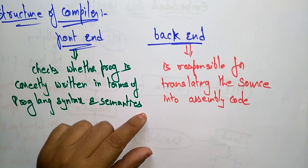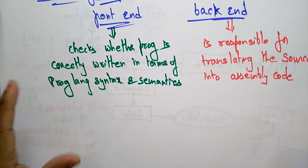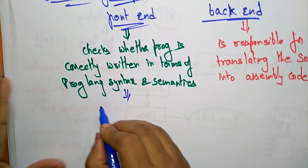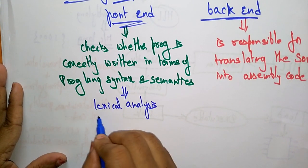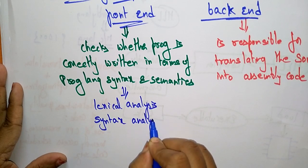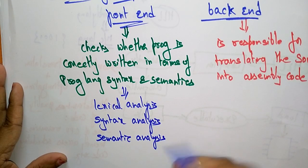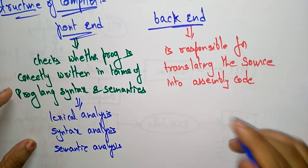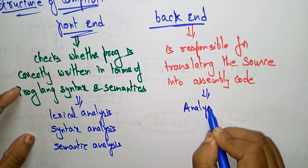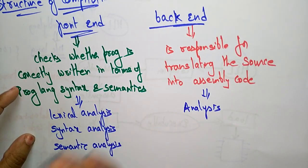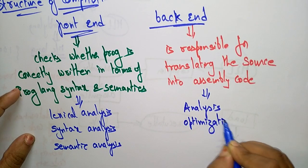The back end is responsible for translating the source code into assembly code. The front end consists of lexical analysis, syntax analysis, and semantic analysis. The back end analyzes whatever code has been written, translates from source to assembly, performs optimization, and does code generation.